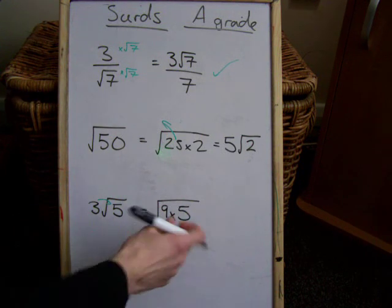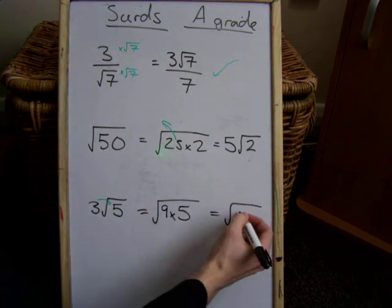So that's the root of 9 times 5, which equals the root of 45.